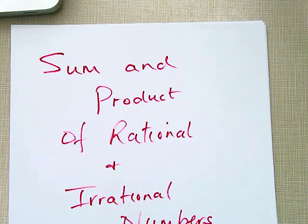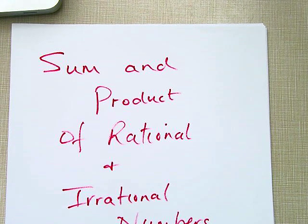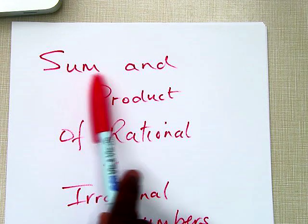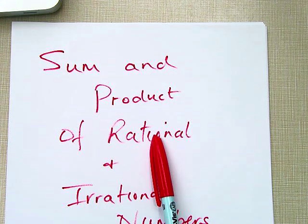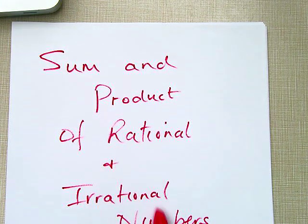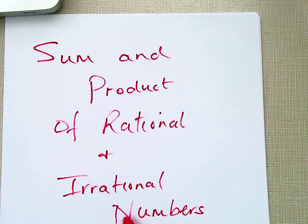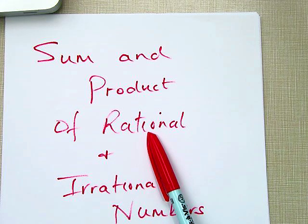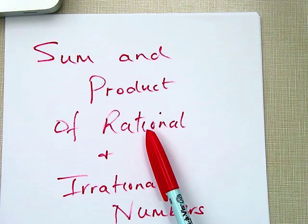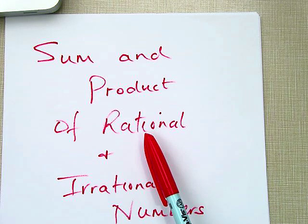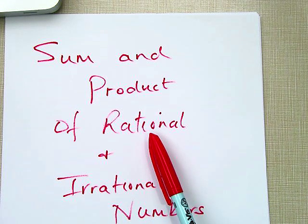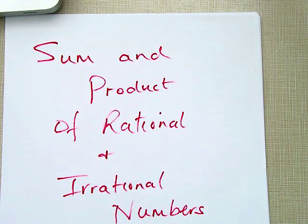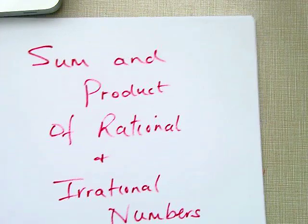In this video, I want to talk about the sum and product of rational and irrational numbers. We're going to do different combinations. For example, rational plus rational, rational plus irrational, irrational plus irrational, et cetera. So let's start with the easier ones.